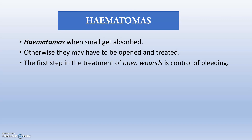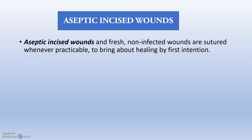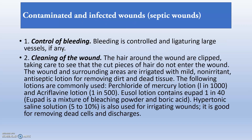The first step in the treatment of open wounds is control of bleeding. For aseptic incised wounds — fresh and non-infected wounds — we will be suturing them and bringing about healing by first intention. For contaminated and infected septic wounds, first we need to control the bleeding: if any vessels are involved, they must be ligated and bleeding controlled.